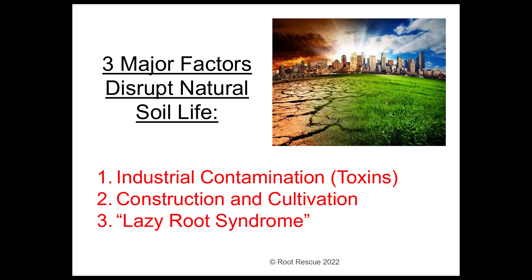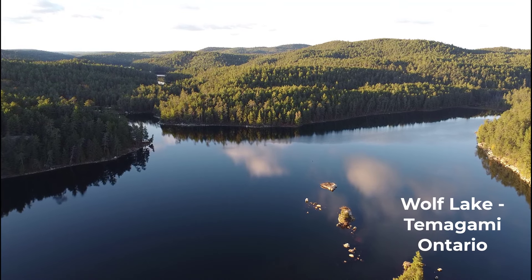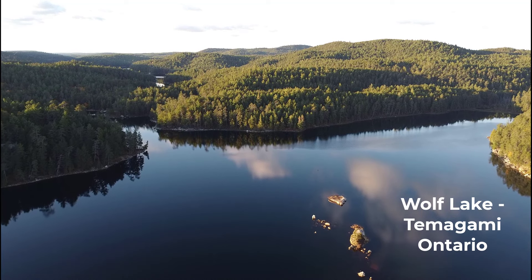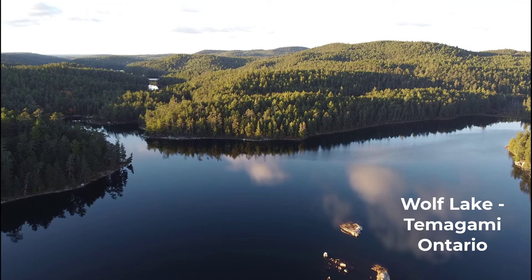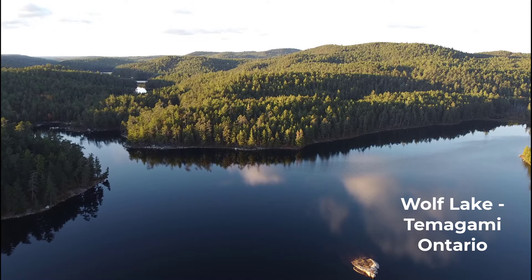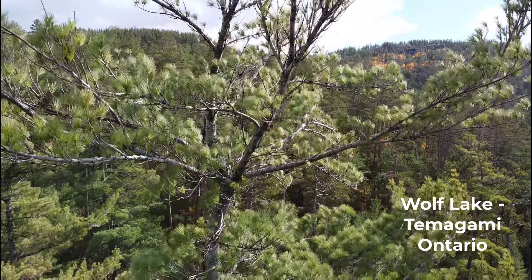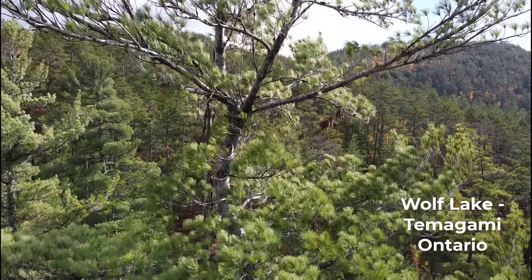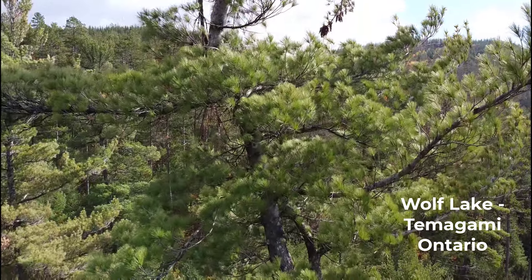Nature has evolved well-established processes that help soils to recover from damage. After all, there are all kinds of natural events that damage soils too — earthquakes, mudslides, volcanic eruptions, floods, etc. — and nature knows how to restore soils after things go sideways. We describe this process of habitat recovery as plant succession. Nature wants all ecosystems to operate at their full capacity, and in our part of the Northern Hemisphere, that climax state is a forest, just like the one seen here at Wolf Lake. This is what nature wants to build, and she knows how to go about it.